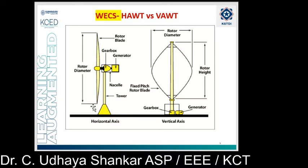VAWT — the vertical axis wind turbine — has some advantages and is gaining considerable interest. As you can see from the figure, in case of vertical axis wind turbine, the rotor is placed perpendicular with respect to the ground, that is, placed vertically. The rotor axis is vertical with respect to the ground, whereas in the horizontal axis wind turbine the rotor axis is horizontal with respect to the ground. Among various types of VAWT, the Darrieus type is the most well-known.